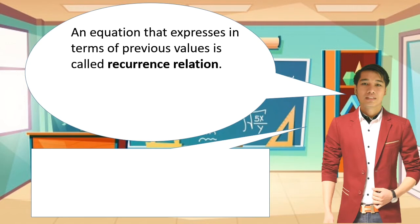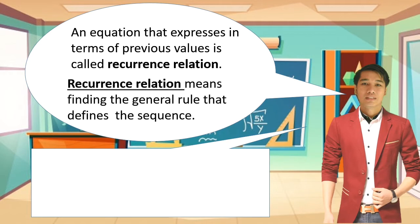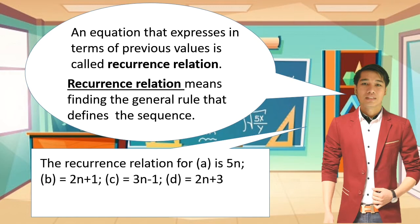An equation that expresses a term in terms of previous values is called a recurrence relation. A recurrence relation means finding the general rule that defines the sequence. For our earlier examples: item a is 5n, item b is 2n plus 1, item c is 3n minus 1, and item d is 2n plus 3.